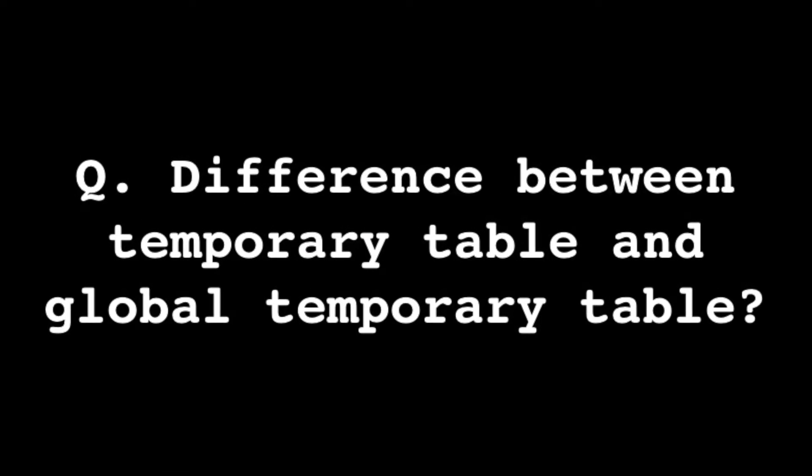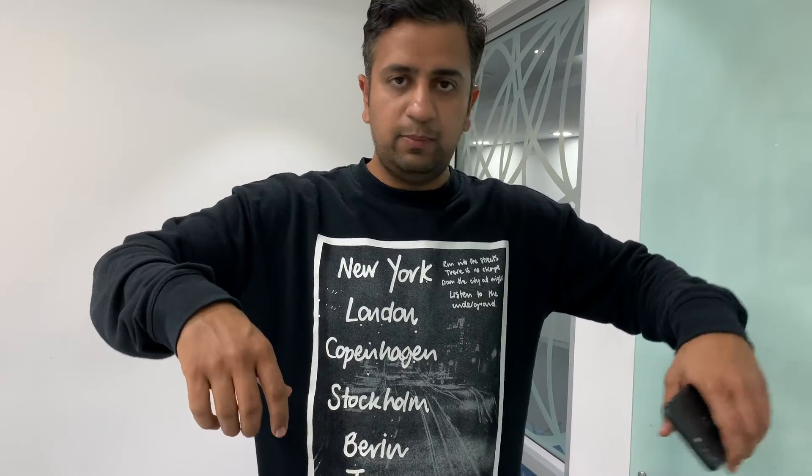Fourth question: What is the difference between a temporary table and a global temporary table? In Oracle, there is no real differentiation — whenever you create a temporary table, you must use the GLOBAL keyword, but the table is still private to the user who created it. In Microsoft SQL Server, there is a distinction between private and global temporary tables, but in Oracle that distinction doesn't exist.